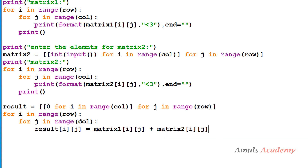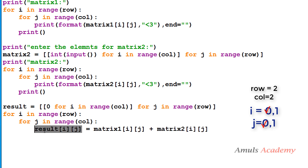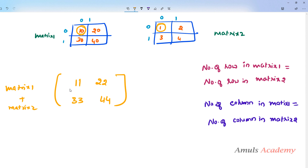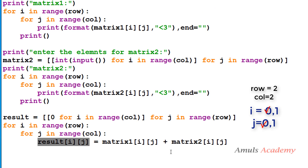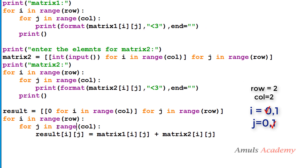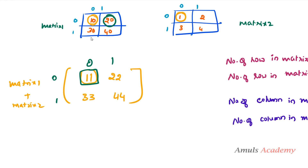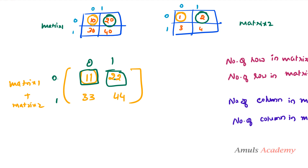When row is 2 and column is 2, range becomes 0 and 1. Initially i=0, j=0, so result[0][0] = matrix1[0][0] + matrix2[0][0] — the first value of each matrix is added and stored. Then j becomes 1, i stays 0, so result[0][1] = matrix1[0][1] + matrix2[0][1]. For example, 22 is added and stored at position [0][1]. The calculation continues this way for all elements.